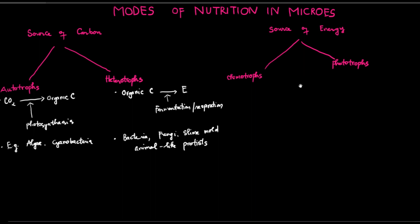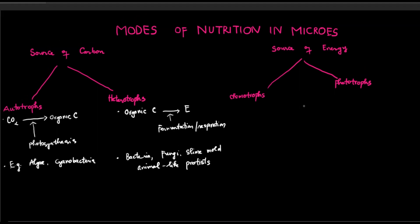Now we move to the second system, which classifies microorganisms based on the source of energy, or where they obtain energy from. If microorganisms obtain energy from chemicals, then they are said to be chemotrophic organisms. If they obtain energy from light, then they are said to be phototrophic microorganisms.